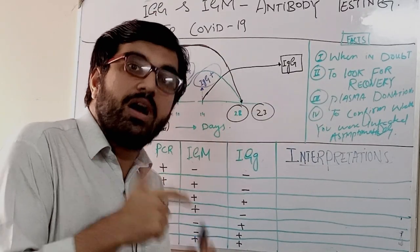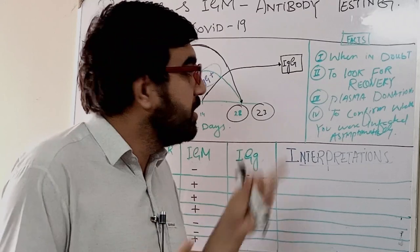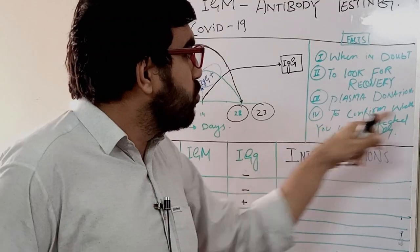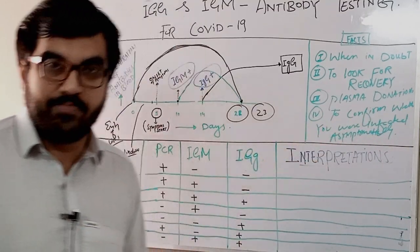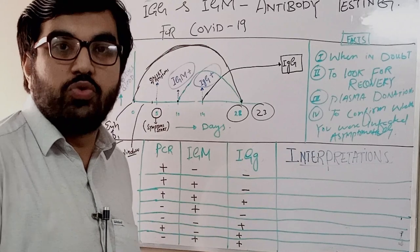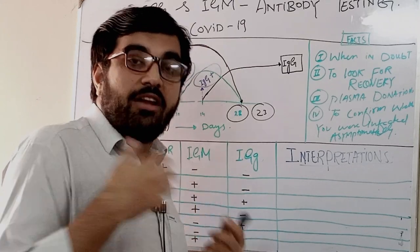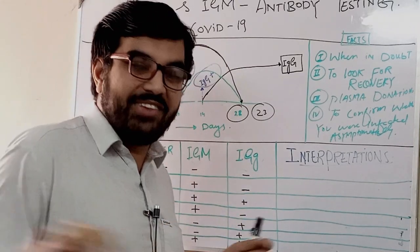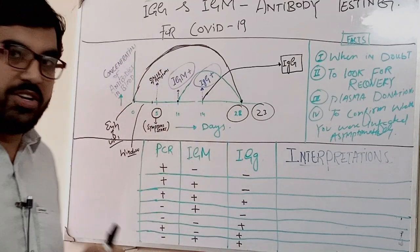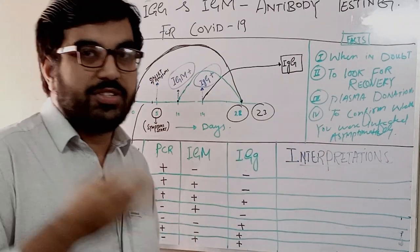Point two: to look for recovery — whether the patient has recovered. Point three: for plasma donation criteria, you must have IgG antibody titers. Point four: to confirm asymptomatic infection — for example, healthcare workers who are unsure if they were exposed. If IgG titers are high, it means you were recently infected and may have protection, even if the infection was asymptomatic or just a mild fever for one day.